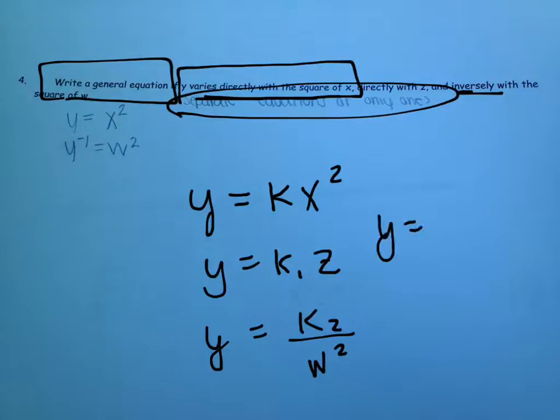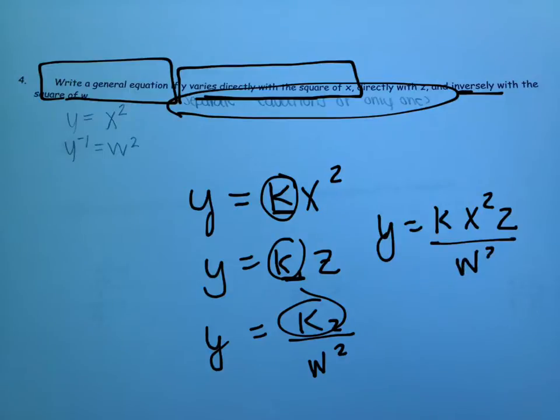And we can write k, that constant might be, it doesn't matter if you're multiplying all these constants together, it's still going to be some constant, times x squared times z, all divided by w squared.